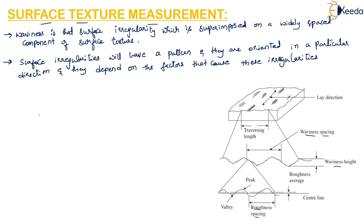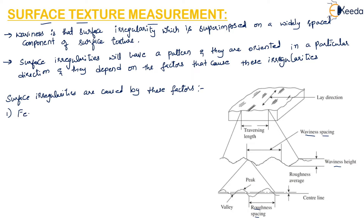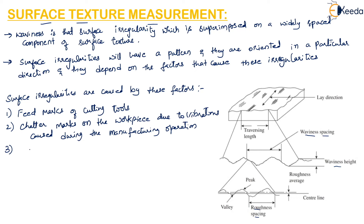Surface irregularities are caused because of the following factors. First, feed marks of the cutting tools — when cutting tools cause marks on the surface, they produce irregularities. Second, chatter marks on the workpiece due to vibrations caused during manufacturing operations. Third, irregularities on the surface due to rupture of workpiece material during the metal cutting operation.